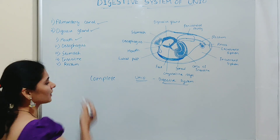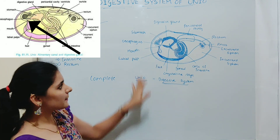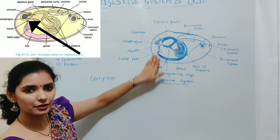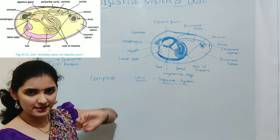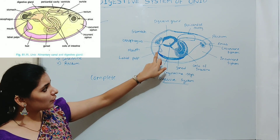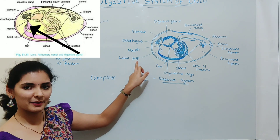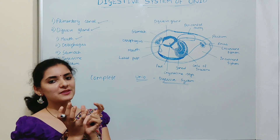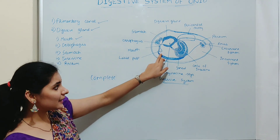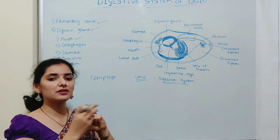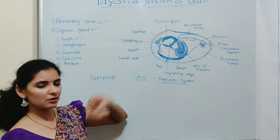The mouth in the case of Unio is a small slit-like structure present at the anterior portion of the body, just below the anterior adductor muscle. On each side of the mouth there are paired fleshy triangular structures known as labial palps. These labial palps are joined at the borders to form an upper and lower lip, and they enclose a central ciliated groove which leads to the mouth.